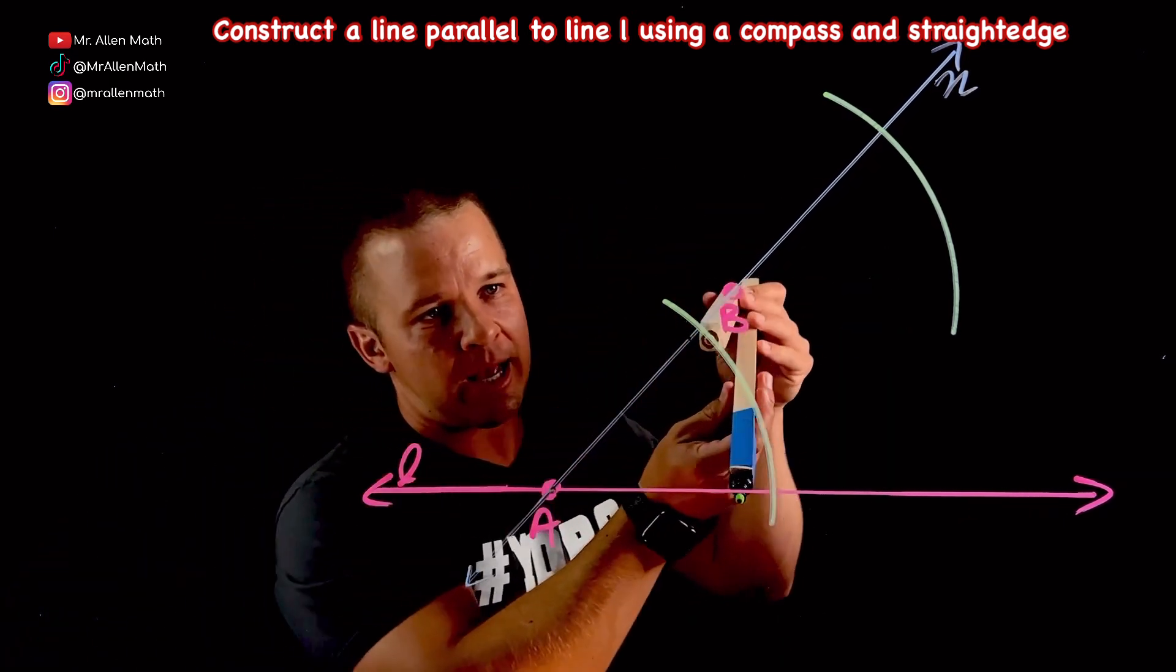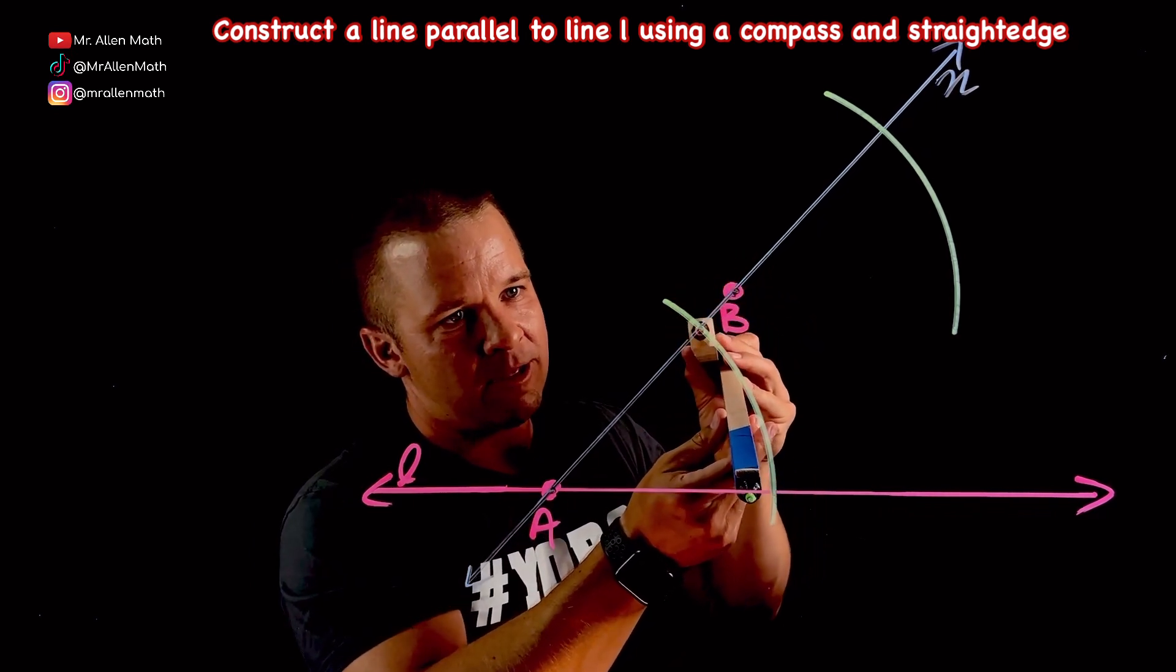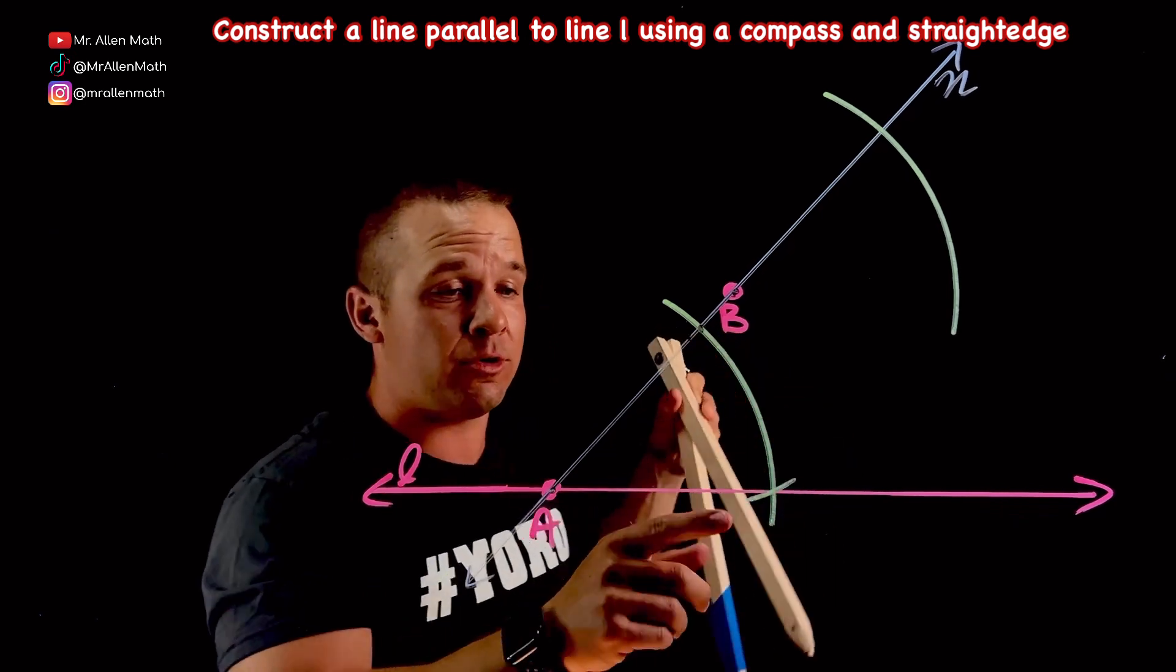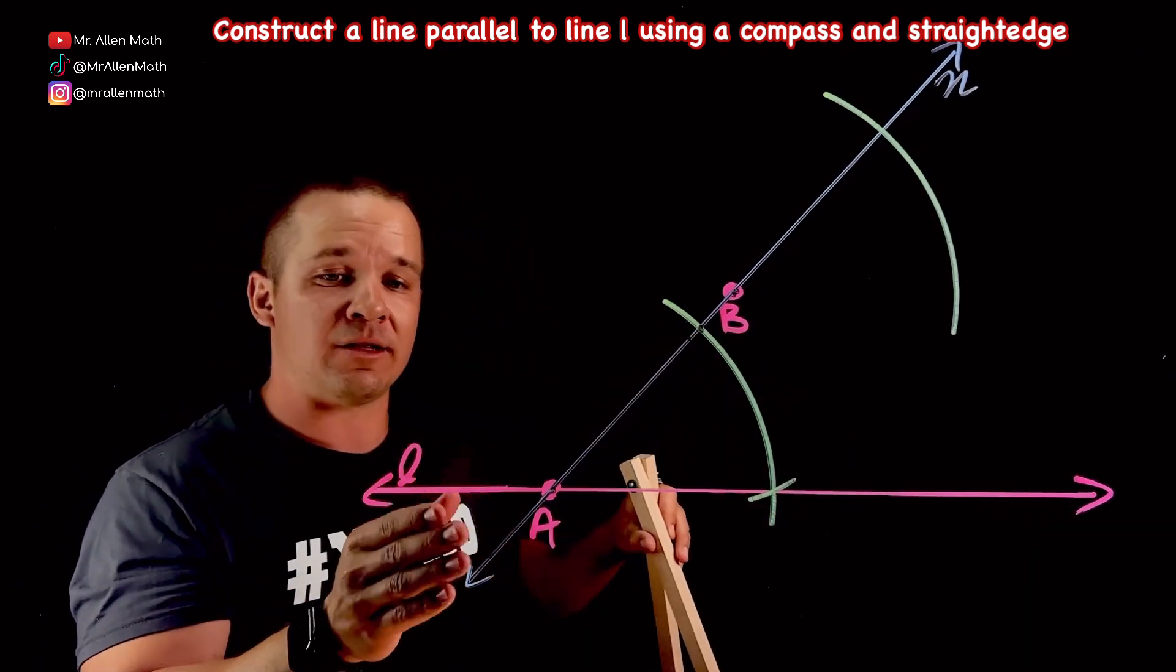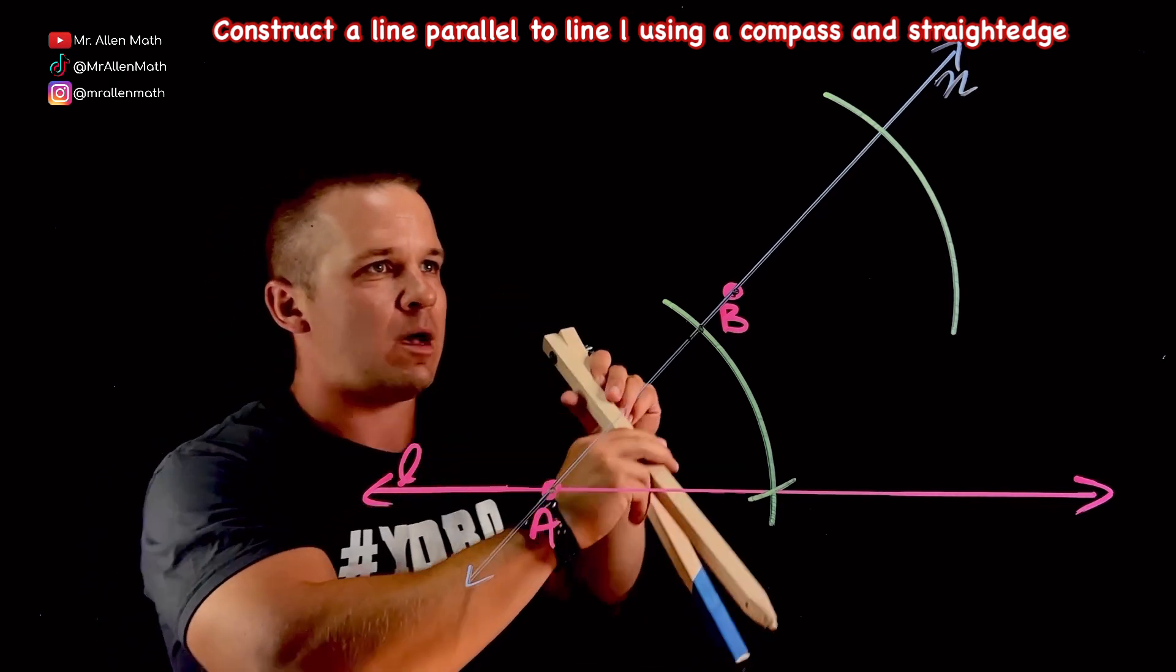So if I take this pointy end here and I pop it on that intersection, you're going to notice that this green marker is going to pass through where that arc intersected the pink line, right? The line L.